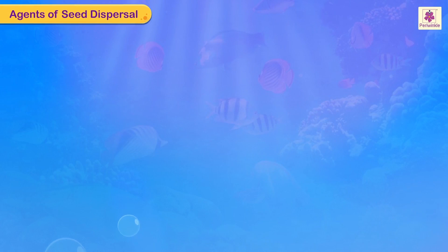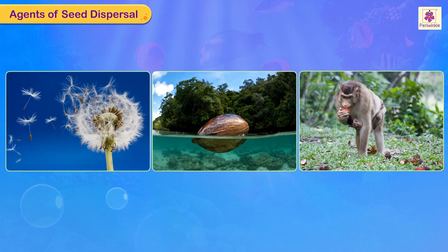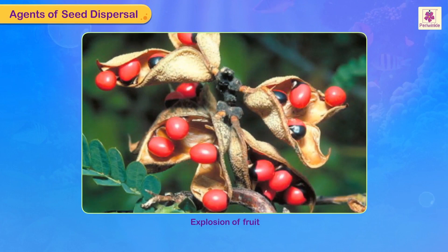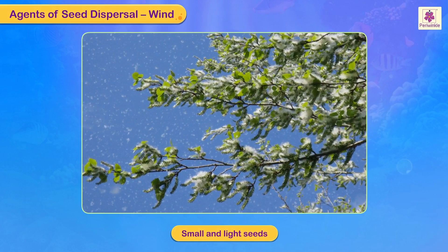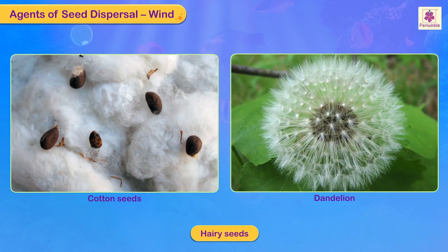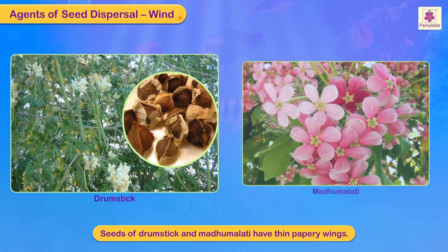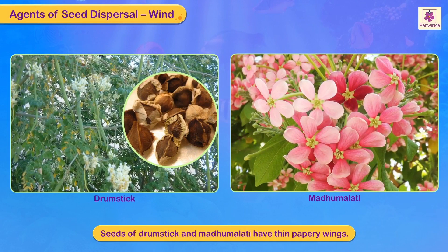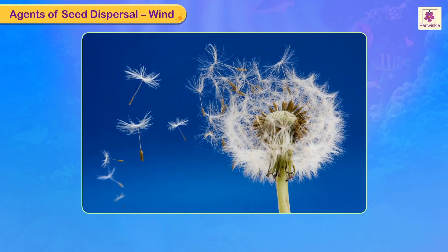Agents of seed dispersal: seeds get dispersed by various agents like wind, water, and animals. Some plants also employ the method of explosion of fruits. Seeds dispersed by wind are small and light. Some are hairy — for example, cotton seeds and dandelion. Seeds of drumstick and madhu malati have thin papery wings and we often see them floating in the air.